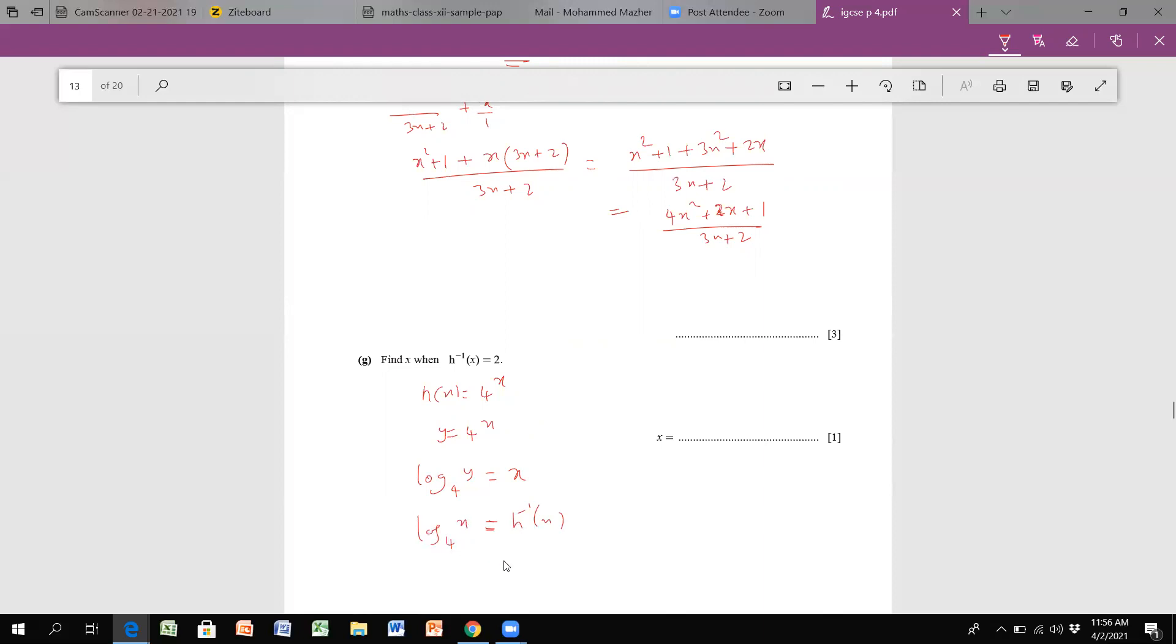This value is given to me as 2. So for what value of x am I gonna get this equal to 2? So if I swap it again, x equals 4 raised to 2, which means 4² is nothing but 16. So my value of x here is 16.